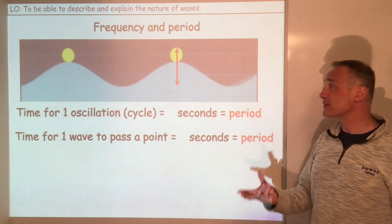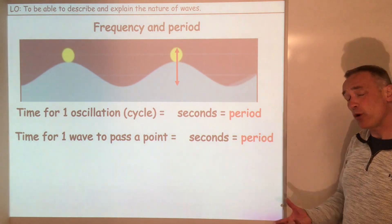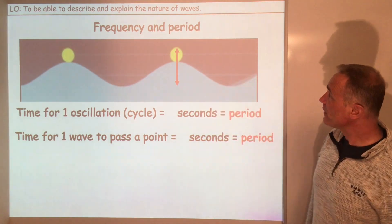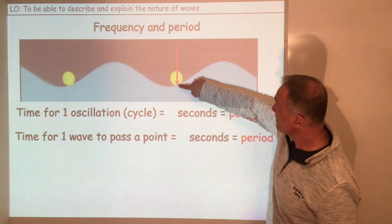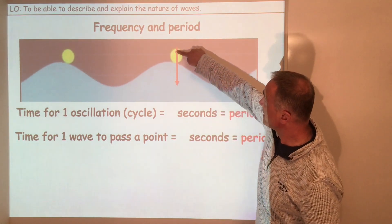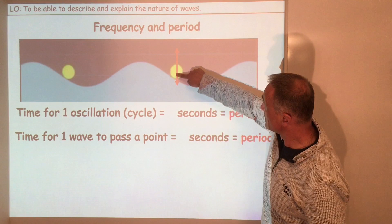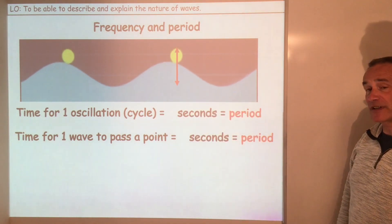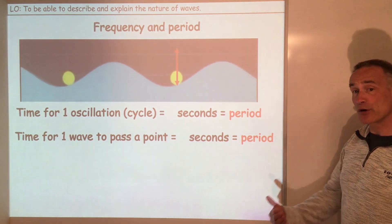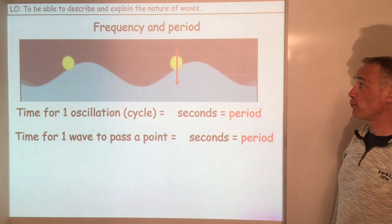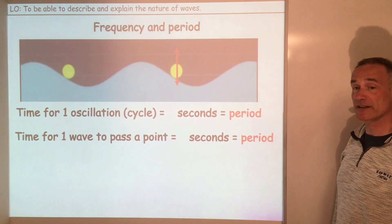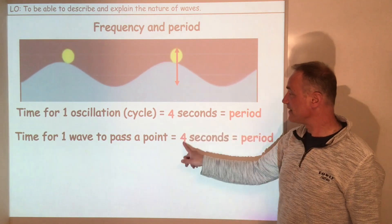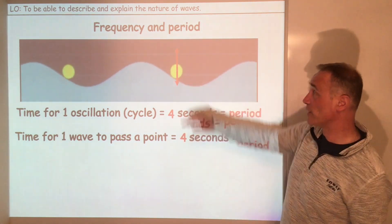So what about a link between frequency and period? Period is the time for one cycle. If I start this film going, you will see that this particle is doing oscillations — up to there and back again is one cycle. Pause the video, get your phone out, and measure that. What do you get the time for one cycle to be? I've measured it at four seconds — so that's how long it takes for it to do one cycle.